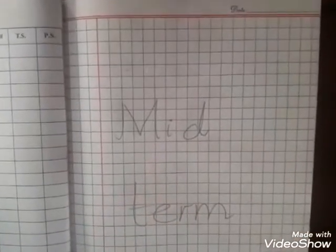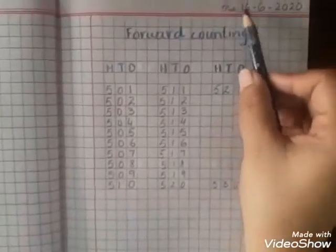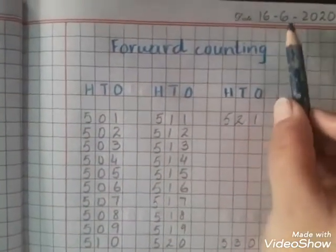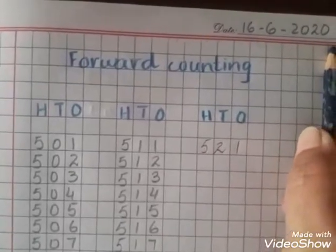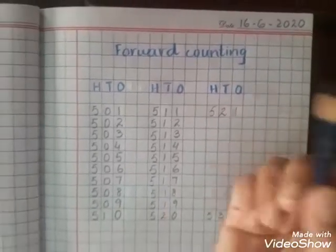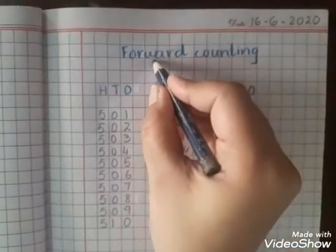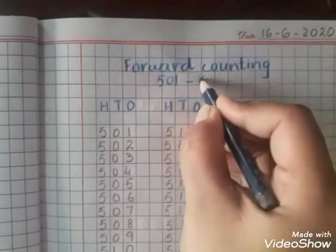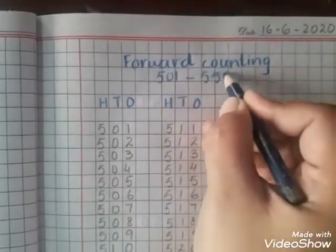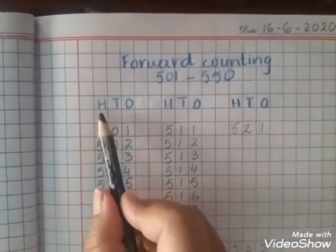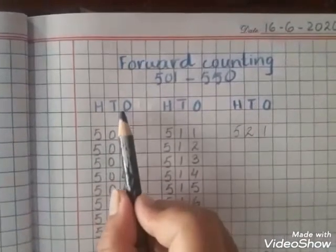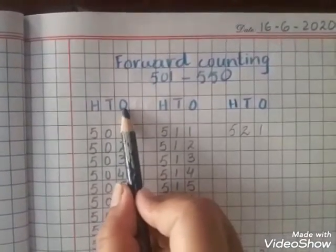After that, make a now, then open this page and make a title page. After that, turn the page, write today's date that is 16 June 2020, then hold the blue color pencil and put the heading 'Forward Counting', then write 501 till 550. Then again write H T O.